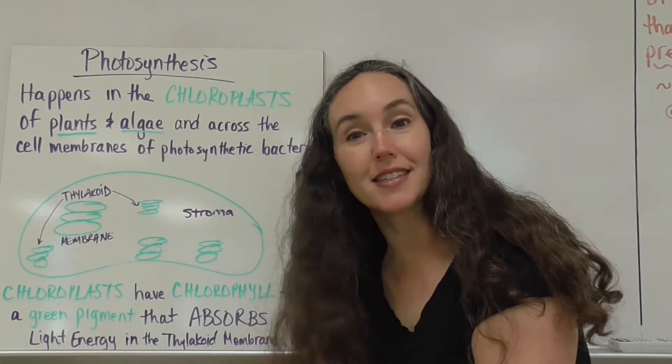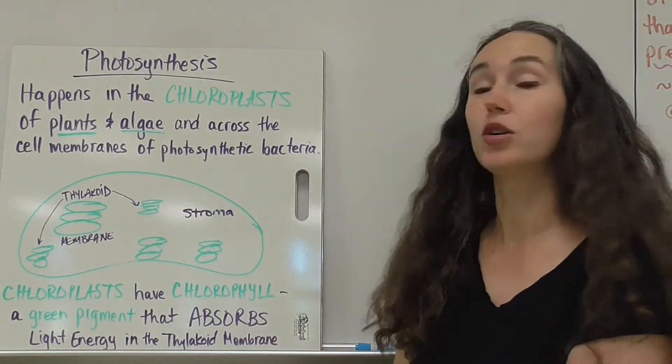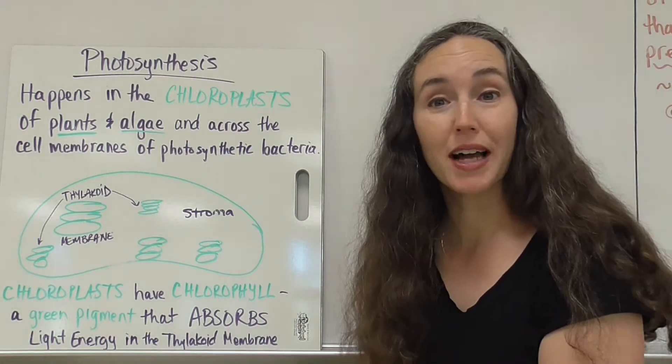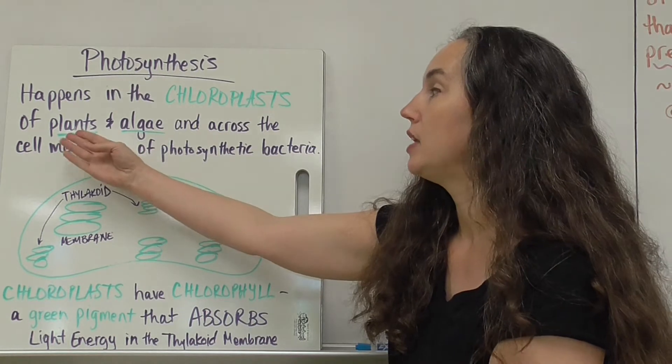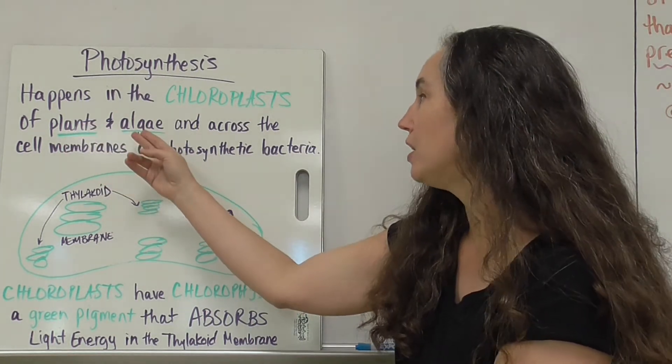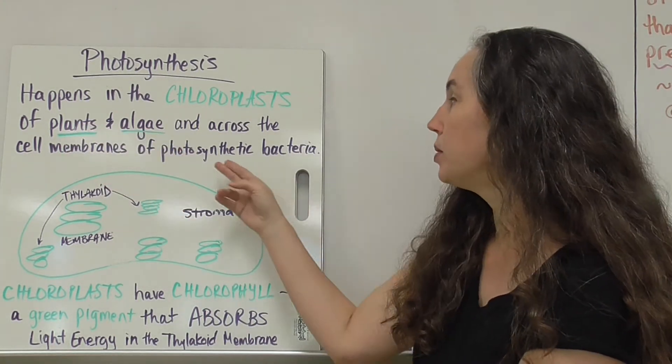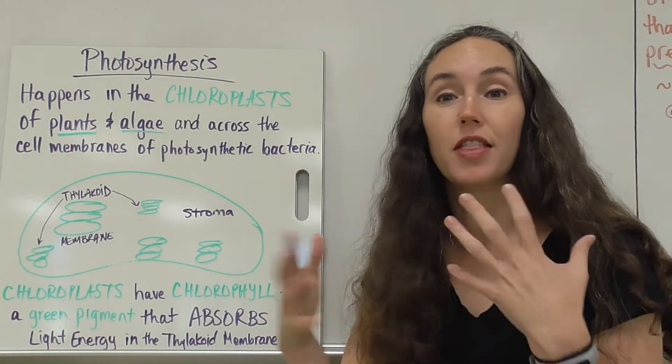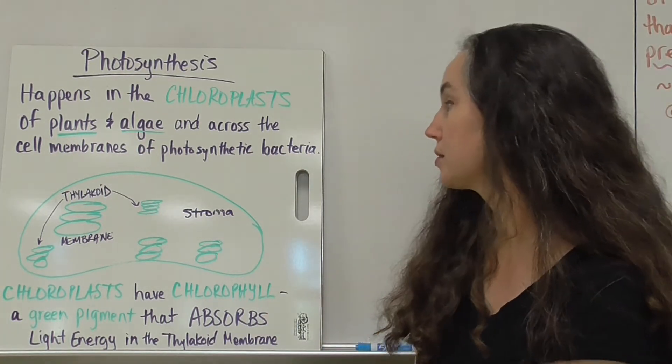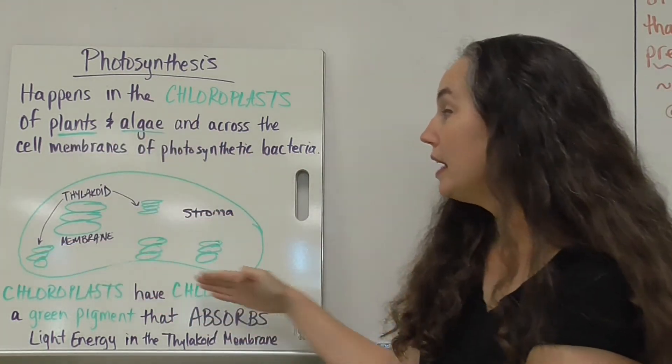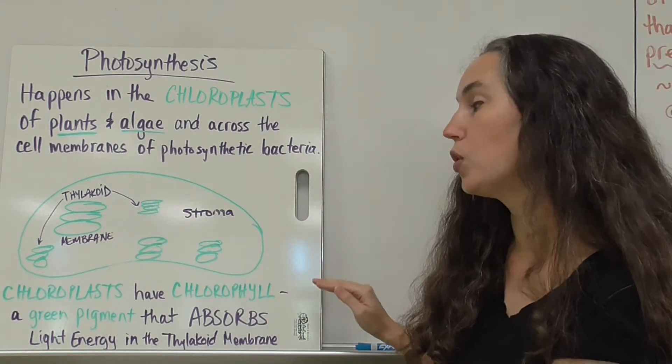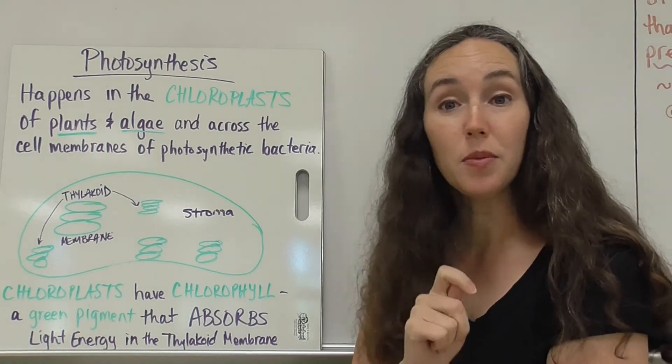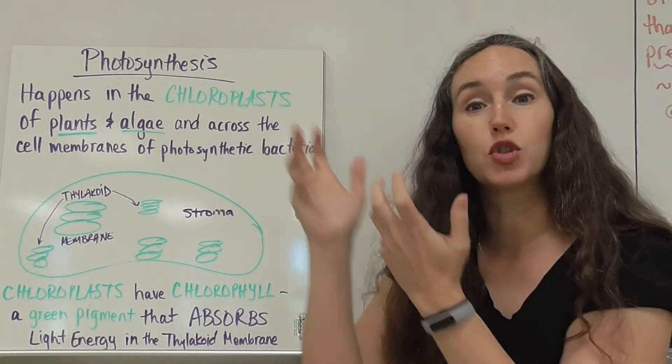Within plant cells, you can find chloroplasts and chloroplasts is where photosynthesis happens. Again, this is going to happen in organisms like plants, algae, and across the cell membranes of some bacteria that are able to do photosynthesis. Within chloroplasts, you can find a chemical called chlorophyll. This is a green pigment molecule that's going to absorb light.